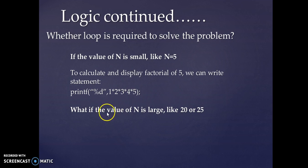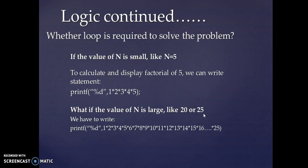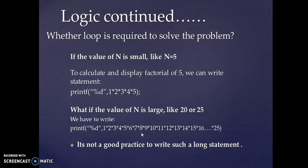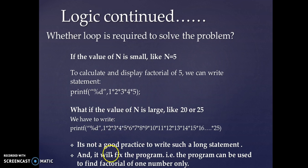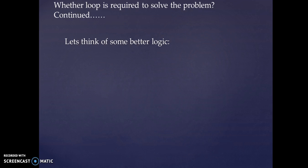But what if the value of n increases to something like 20 or 25? In that case we would have to write a very long printf statement up to 25 terms. That is not good programming practice. Another disadvantage is that it fixes the program — if it is written to find factorial of 25, we cannot use the same program to find factorial of 24. This is a bigger disadvantage, so let's think about a better logic.